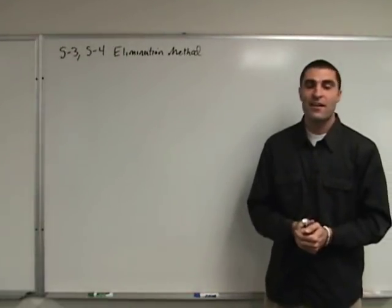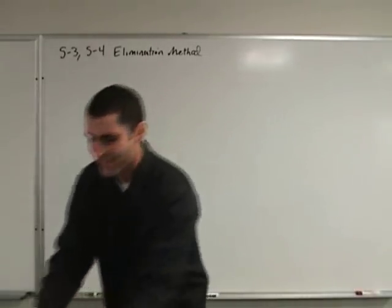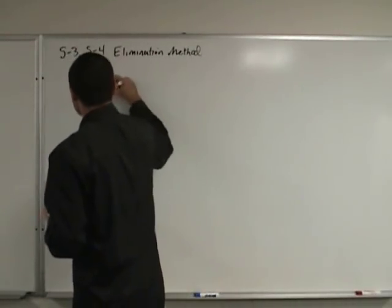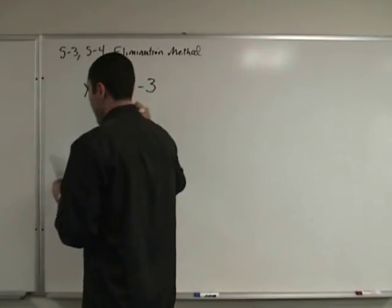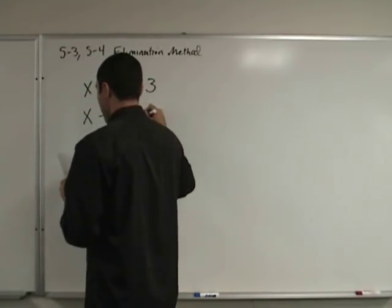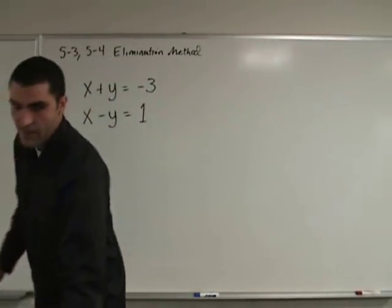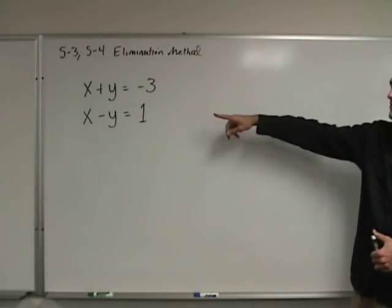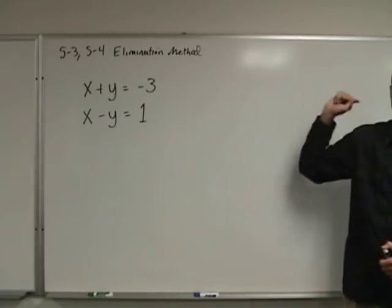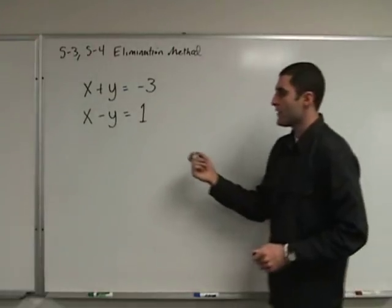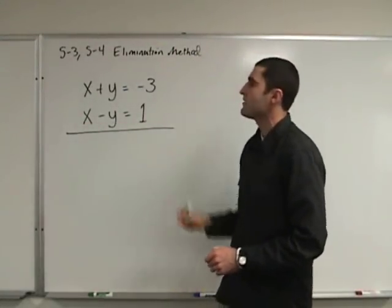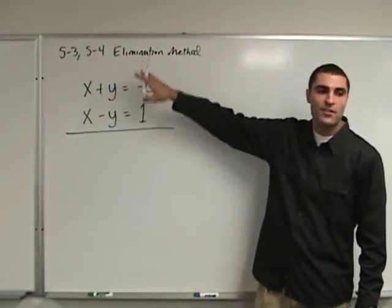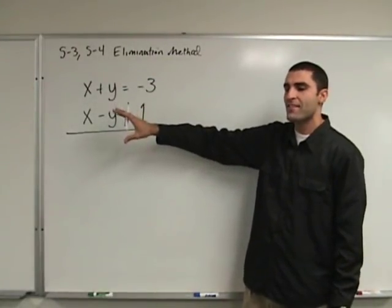We're about to do the elimination method for Algebra 1. We've done the substitution method — with substitution we wrote two equations side by side. For elimination method, I'd recommend writing two equations one on top of the other. The whole concept of elimination method is to add down within the equation — add by columns.